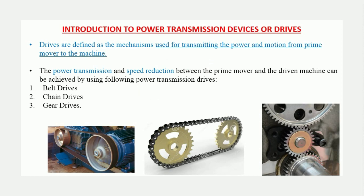Drives are defined as the mechanism used for transmission of power or motion from prime mover to the machine. Consider at one end you have a prime mover, which is usually an electrical motor, and at the other end you have the machine. The arrangement used to transmit power — also used for speed reduction — is called a drive. These drives are classified in three ways: belt drive, chain drive, and gear drive.